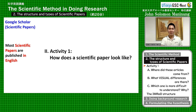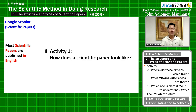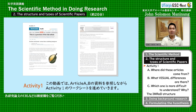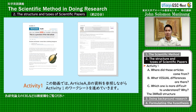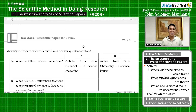Let's go. Now, how does a scientific paper look like? We will proceed to activity number one. So everybody, do you have the paper that says activity one? Half of you will be holding article A. Half of you will be holding article B. This is how the worksheet activity one looks like.